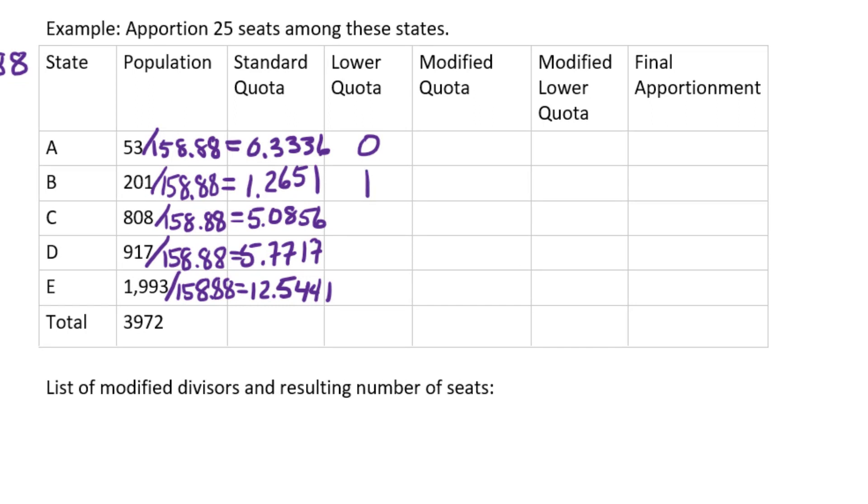So we have 0, 1, 5, 5, and 12. Notice I did not use traditional rounding where the 12.5 would have rounded up to 13. This is a lower quota, so we're rounding down.